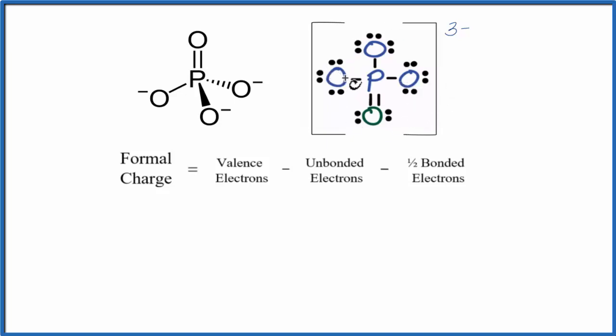So let's calculate the formal charge on this oxygen right here. Oxygen, that's in group 16, sometimes called 6A, on the periodic table. It has six valence electrons. Unbonded, these are the electrons that aren't involved in chemical bonds. They're not between atoms. We have 2, 4, 6 for this oxygen.